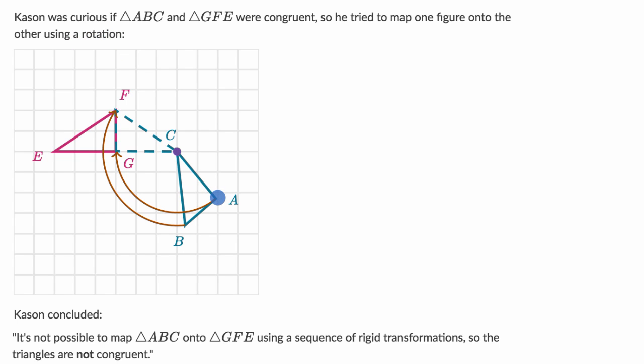So let's see, this is triangle ABC and it looks like at first he rotates triangle ABC about point C to get it right over here. So that's what they're depicting in this diagram.